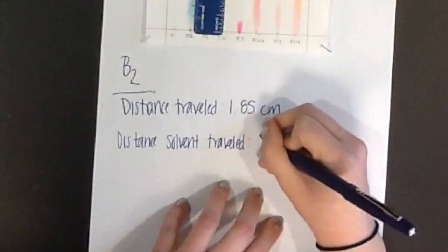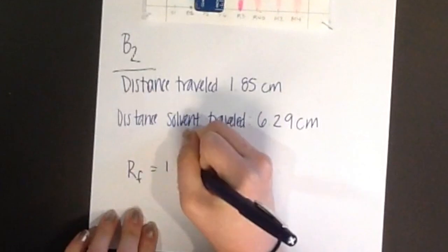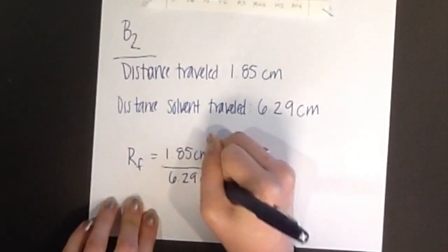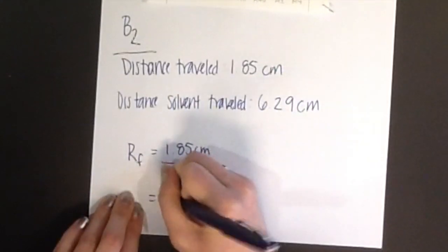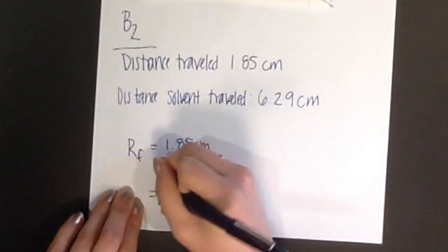Your answer should have the correct number of significant digits and should be unitless. This is because when you divide cm by cm, they will cancel out and you will be left with no units. Do this same calculation for all mixtures present on your origin line. Make sure to record these values in your lab notebook.